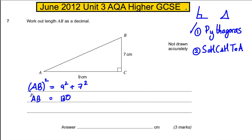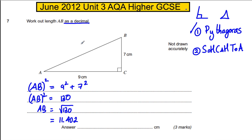Now that's AB squared, so AB must be the square root of 130, and you would get 11.402. But it says work out AB as a decimal, so I would probably just leave it to one decimal place — 11.4 — and state that you've left it to one decimal place. It doesn't tell you exactly what to do here, but that would be sufficient.